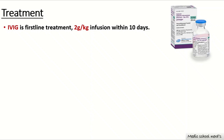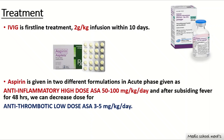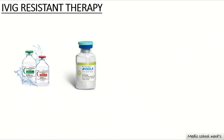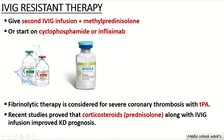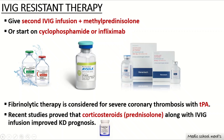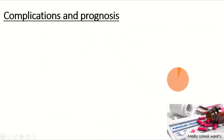IVIG is the first-line treatment, given as 2 grams per kg infusion within 10 days of illness. Alongside IVIG, aspirin is started in two formulations: during the acute phase, a high anti-inflammatory dose of 50 to 100 mg/kg is used; after fever subsides for at least 48 hours, the dose is reduced to an antithrombotic low dose of 3 to 5 mg/kg. If the patient is IVIG-resistant and fever persists after the first infusion, a second IVIG infusion is given within 10 days. Methylprednisolone, cyclophosphamide, or infliximab can also be started. For thrombus formation, fibrinolytic therapy is considered for severe coronary artery thrombosis.